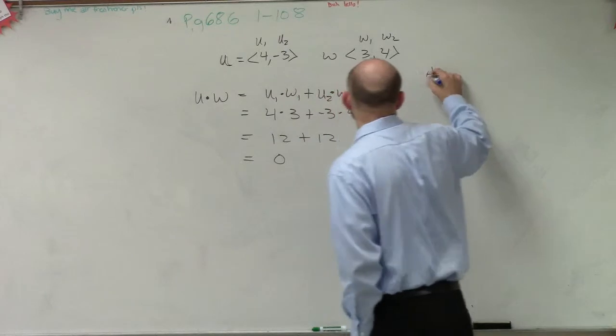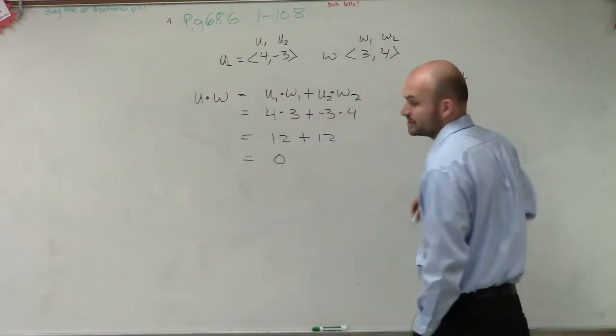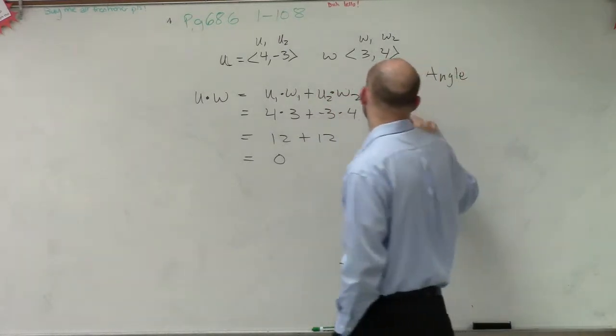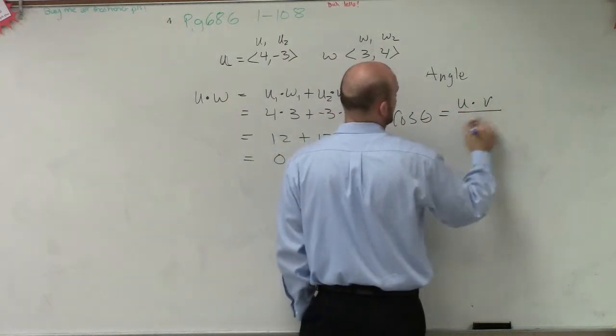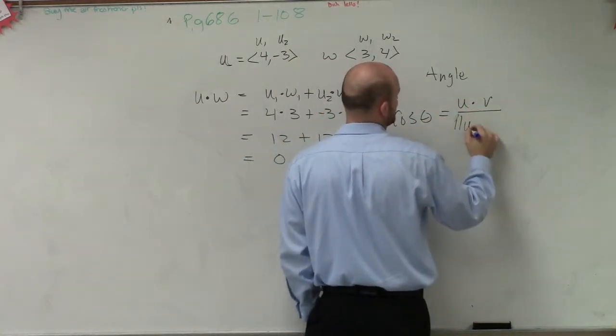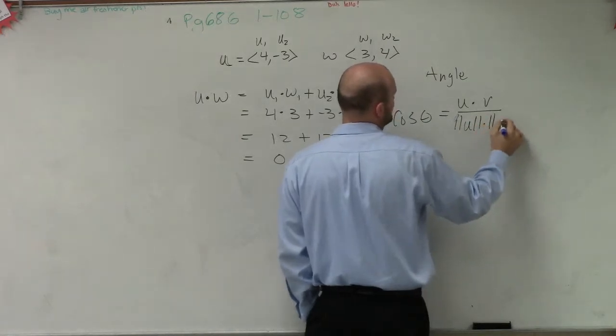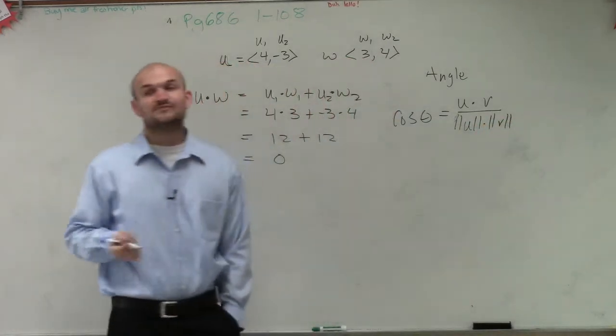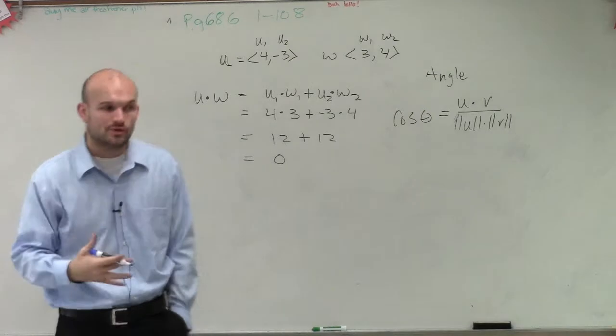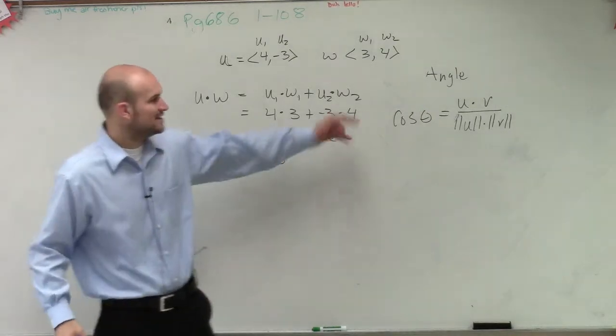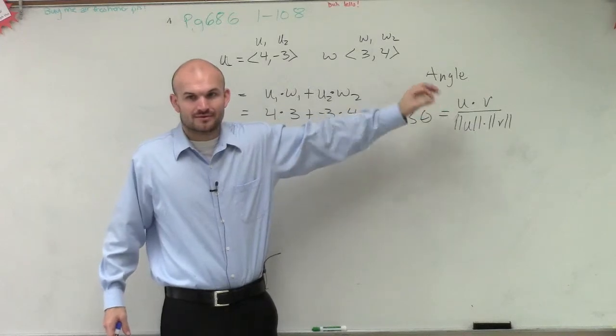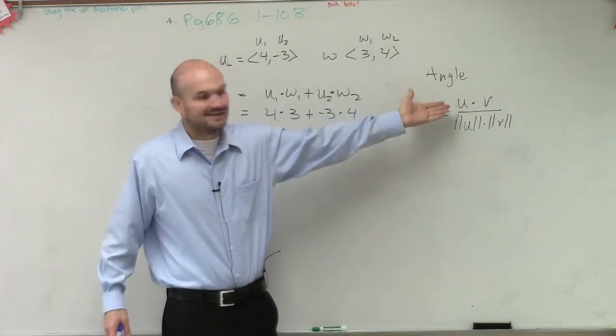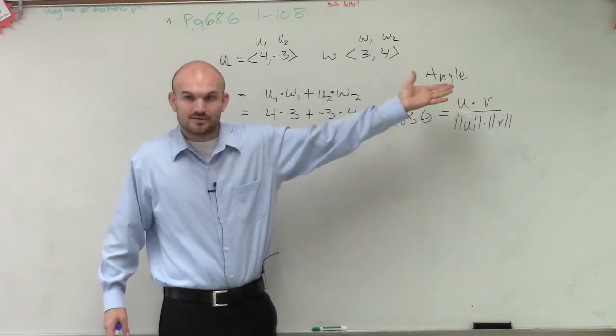Then if you remember, the angle between two vectors is cosine of theta equals u dot v over the magnitude of u times the magnitude of v. Now, in case you forgot how to do the magnitude, I'll show you. But we already know that the dot product of these two vectors gives us 0, so 0 divided by anything is still going to be 0.